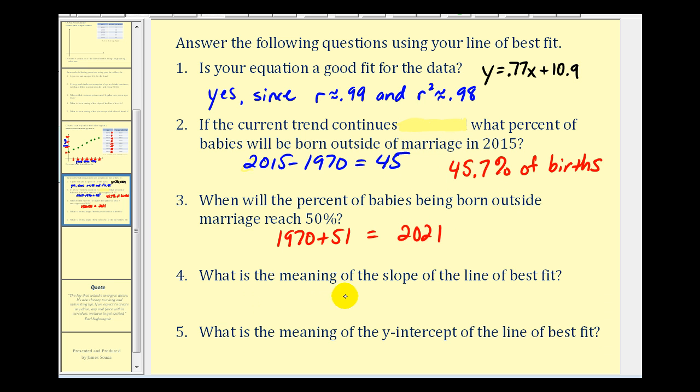Number four, what is the meaning of the slope of the best fit line? Well, the slope is the coefficient of x, so our slope is 0.77. Let's go ahead and write this as a ratio, so over one. The reason that's helpful is this tells us the change in y over the change of x. Well, y represents the percent of births, and x represents the year. So this tells us there's a 0.77% increase of births outside of marriage when x changes by one, which means per year.